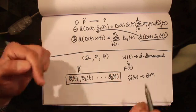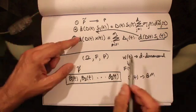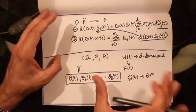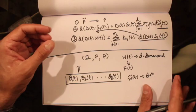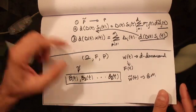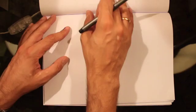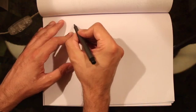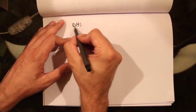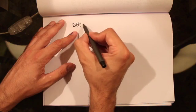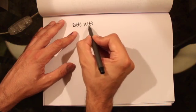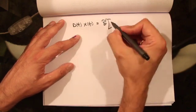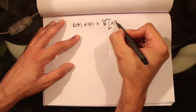Using Girsanov's theorem, we changed the measure from P to P-tilde, and under P-tilde, W-tilde is a Brownian motion. Under P-tilde, we showed that the discounted value of the portfolio process is a martingale. That means the discounted value of the portfolio process, given by D(T) times X(T), satisfies the martingale property: under the risk-neutral probability measure, this equals X of capital T.